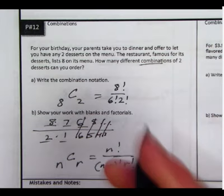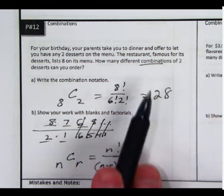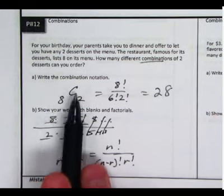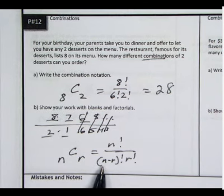So that works as well, and we end up getting 28 as our final answer there. So it's a very similar formula, similar idea. Once you know its combinations, you're going to be putting it into 8c2. You can use the factorials. You can use the blanks, and of course, the equation is here as well.